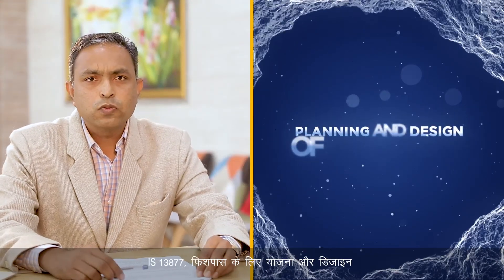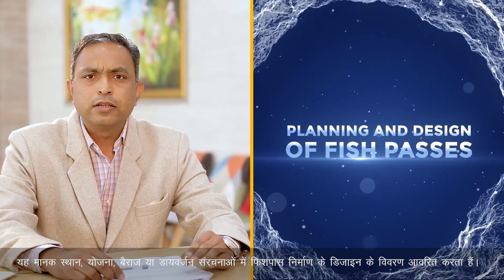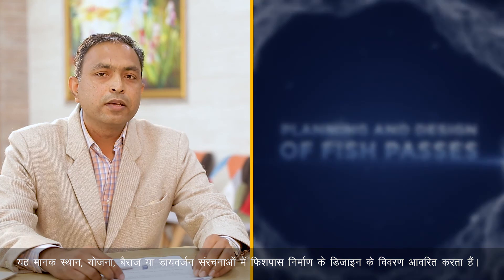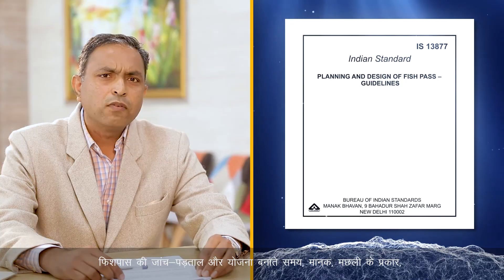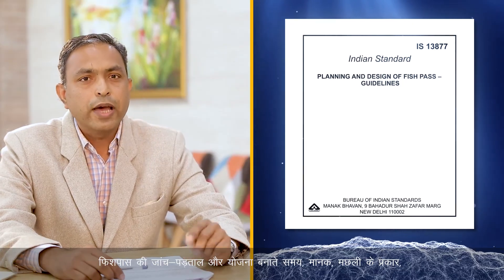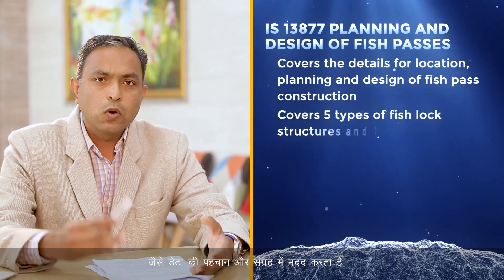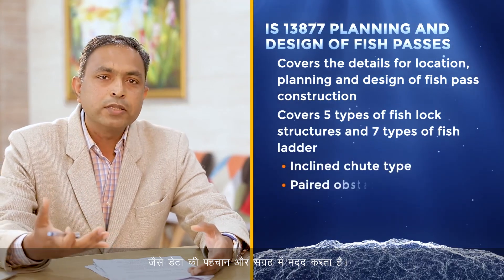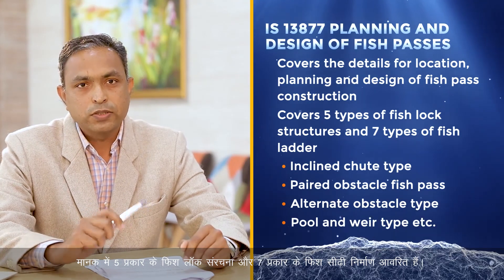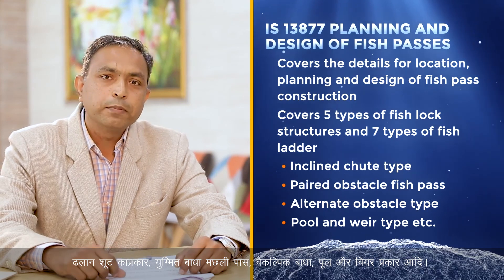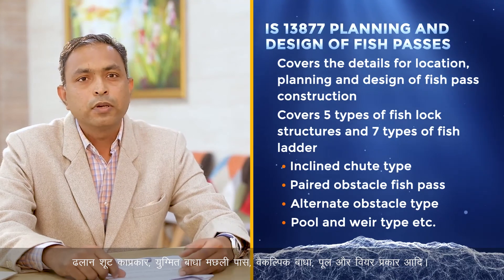IS 13877 covers the planning and design of fish passes, including location, planning and design of fish pass construction in barrages or diversion structures. Data collected includes types of fish, normal swimming speed, locations, amount of fish and minimum water requirements. The standard covers five different types of fish lock structures and seven types of fish ladder constructions, such as inclined shoe type, paired obstacle fish pass, alternate obstacle pool type and weir type.